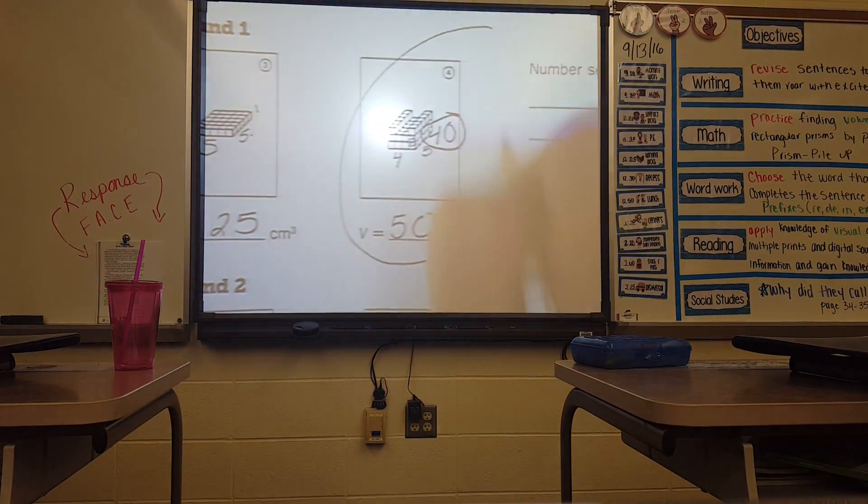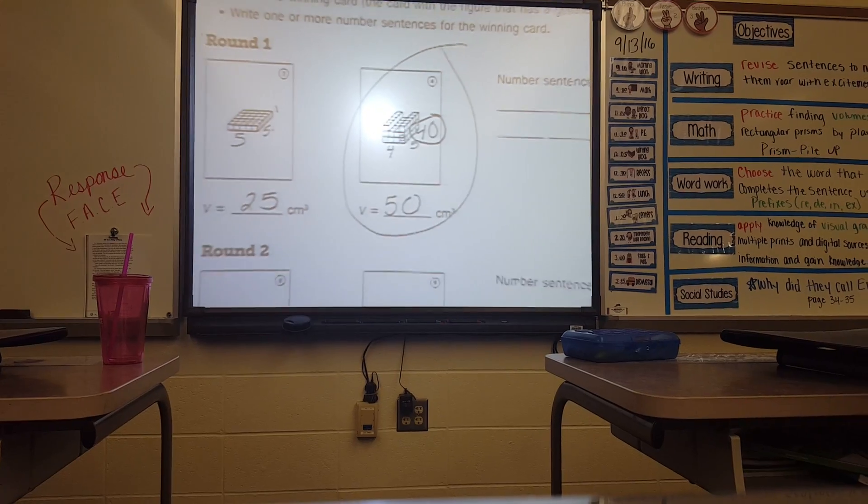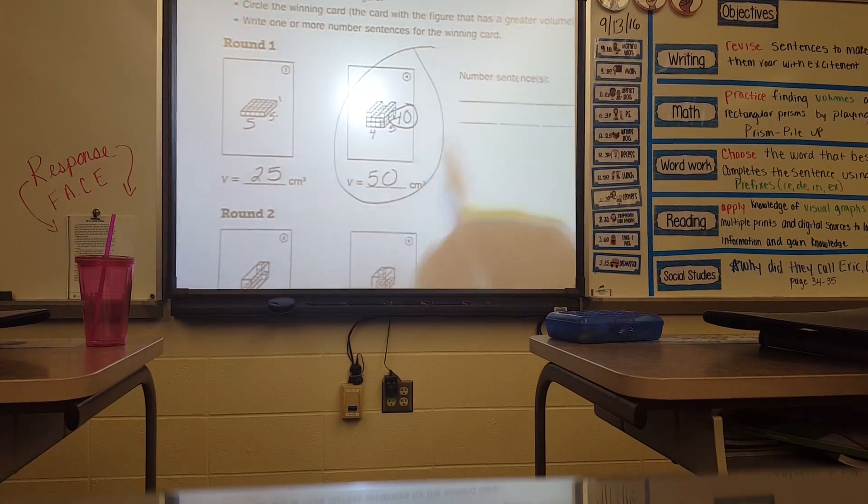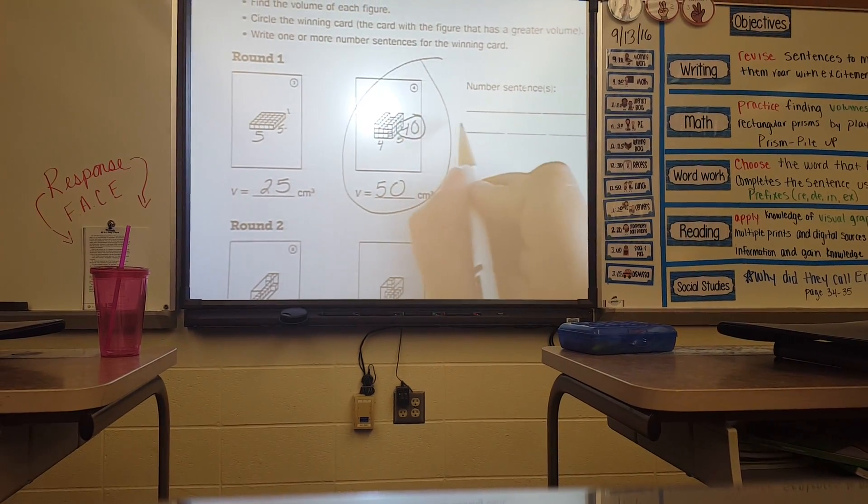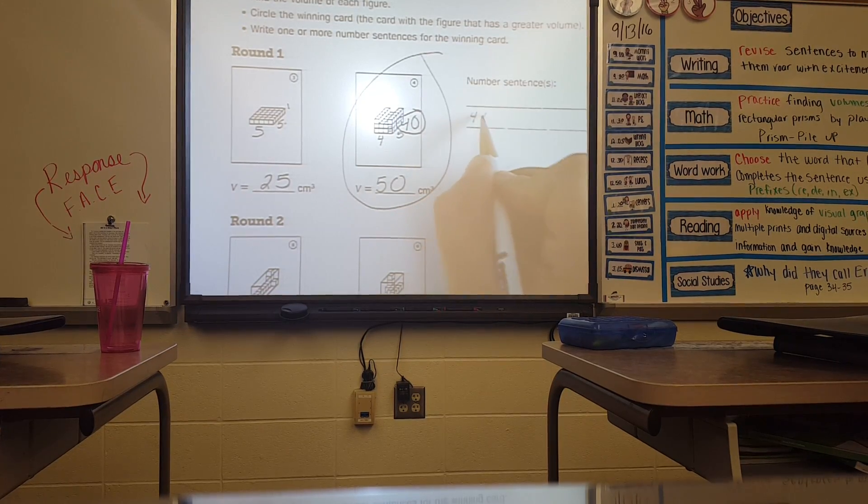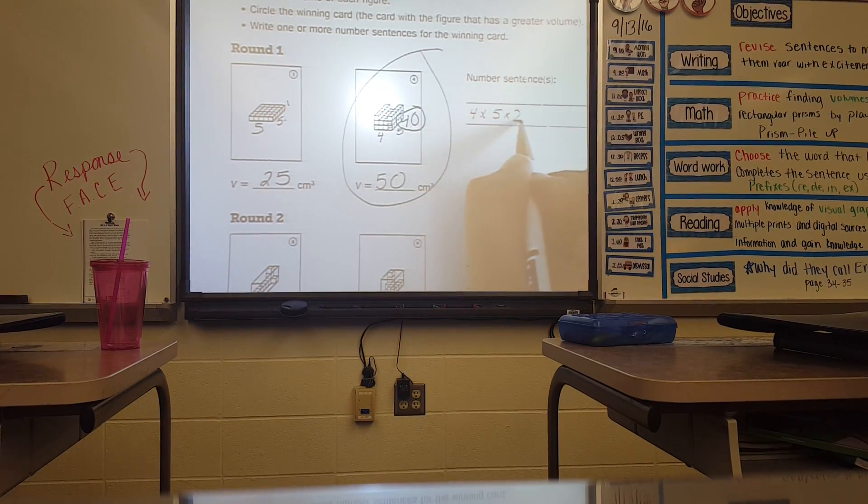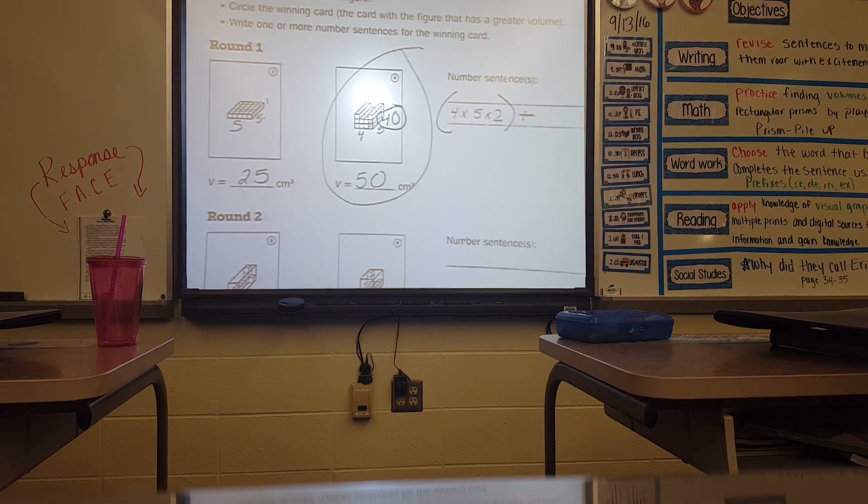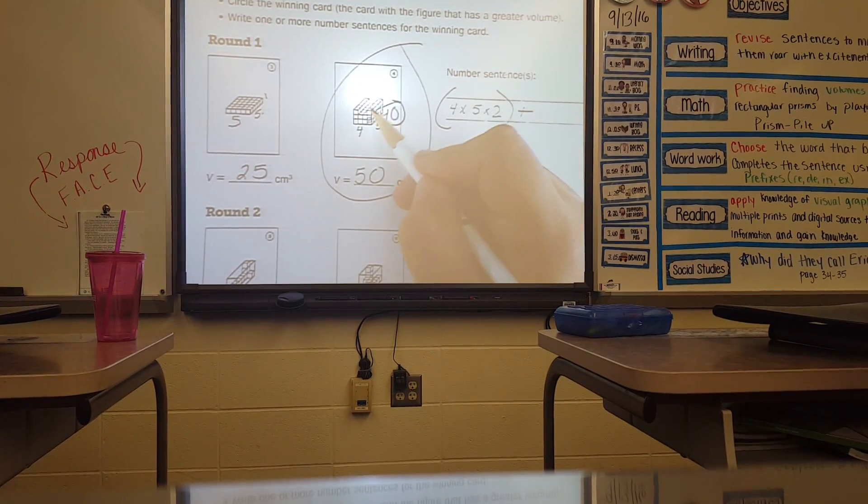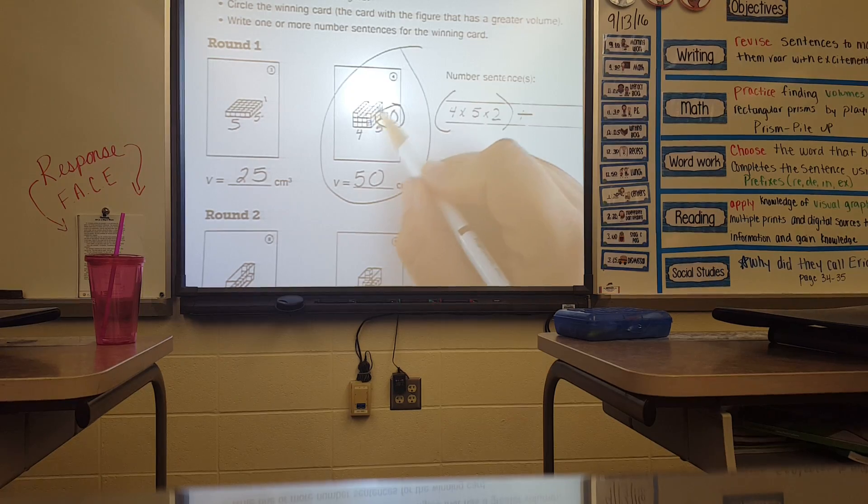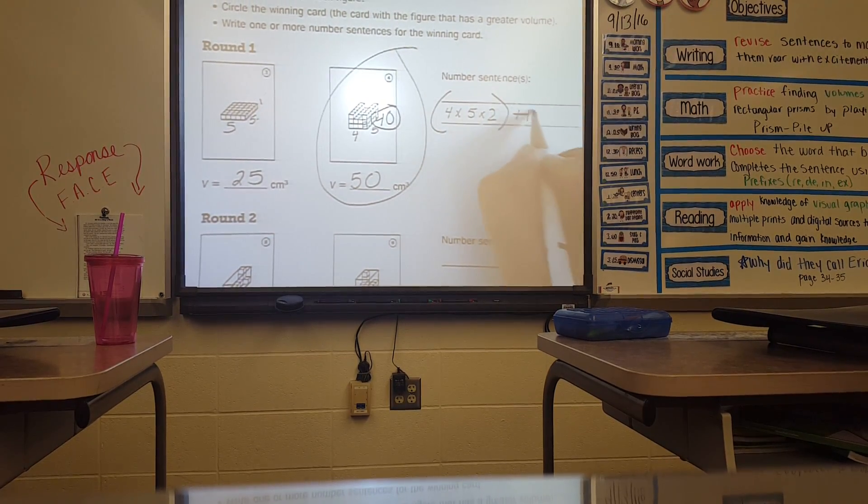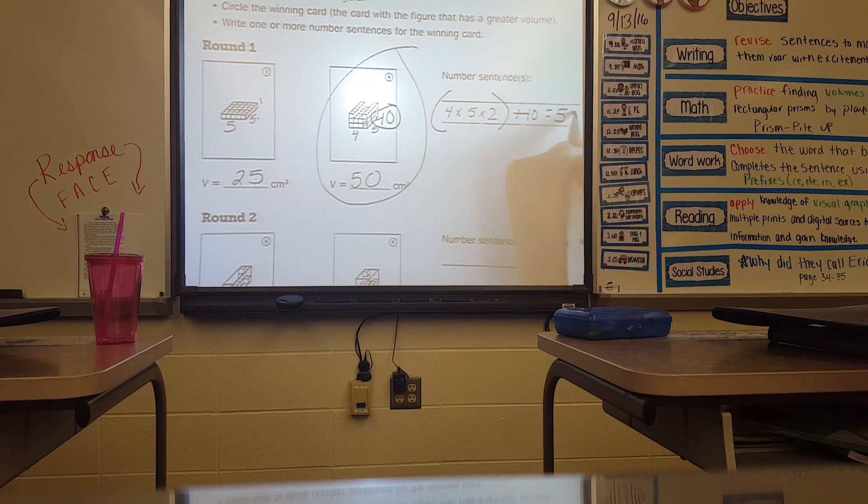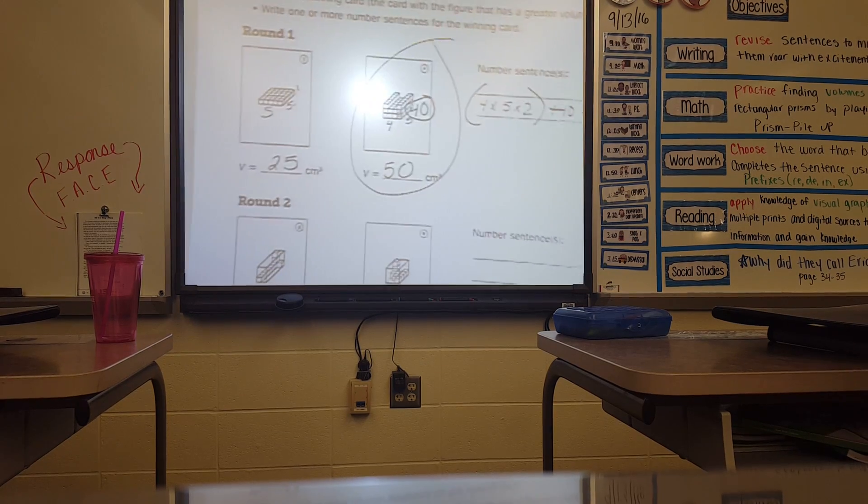So I would circle the winning card and then I need to write a number sentence. First I found the bottom by multiplying: 4 times 5 times 2. I had to do all of that first. Then I added how many extra shapes I had. There were 5 on this side and 5 on this side, so I'm going to put plus 10 equals 50. That is how you do the homework.